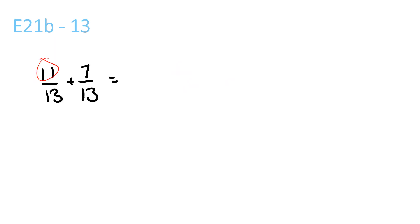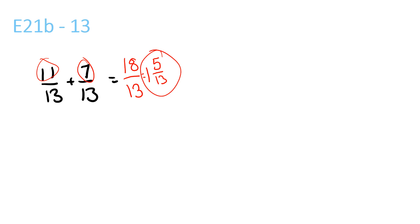11 plus 7 is 18 over 13. 13 goes into 18 once with a remainder of 5 over 13. And there's no possible number that both 5 and 13 go into. So your answer is 1 and 5 over 13.